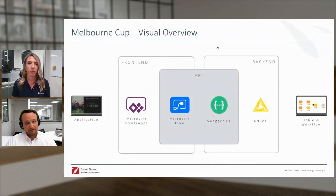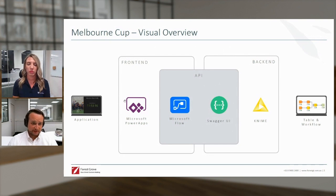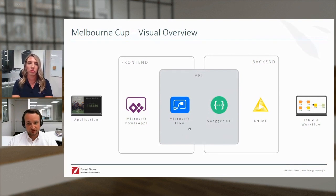Let me share my screen to show you what we actually built. First I want to do a visual overview, and later I'll take you through our application and how we actually built it. It's built out of three parts: we have the front end, we have a back end, and to connect both of them we needed an API. The front end is built within Microsoft Power Apps — that's our actual application — and in the back end, we use KNIME workflows and KNIME tables to cover all of the data. To connect both, we needed Microsoft Flow to translate the JSON into tables readable in Power Apps.